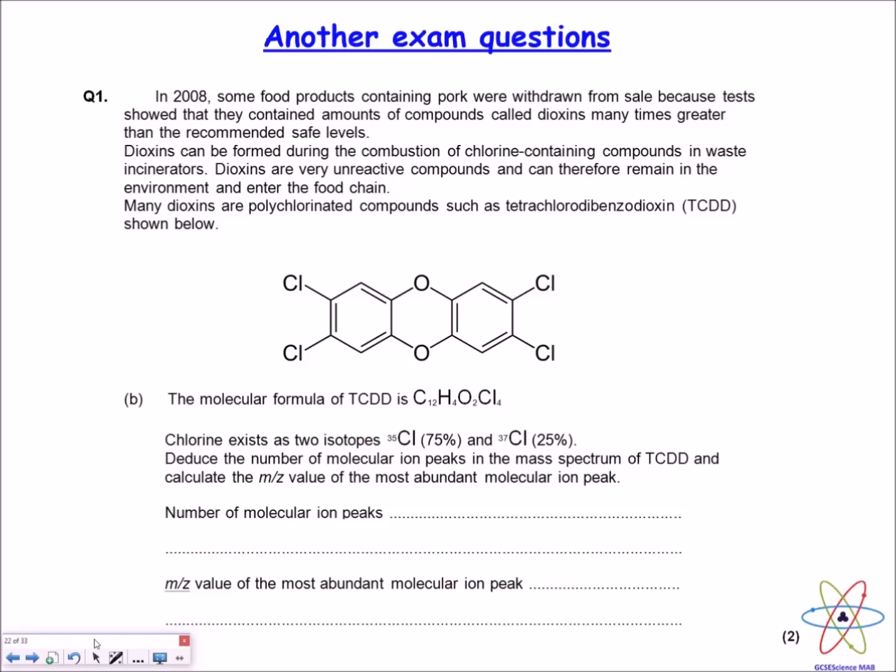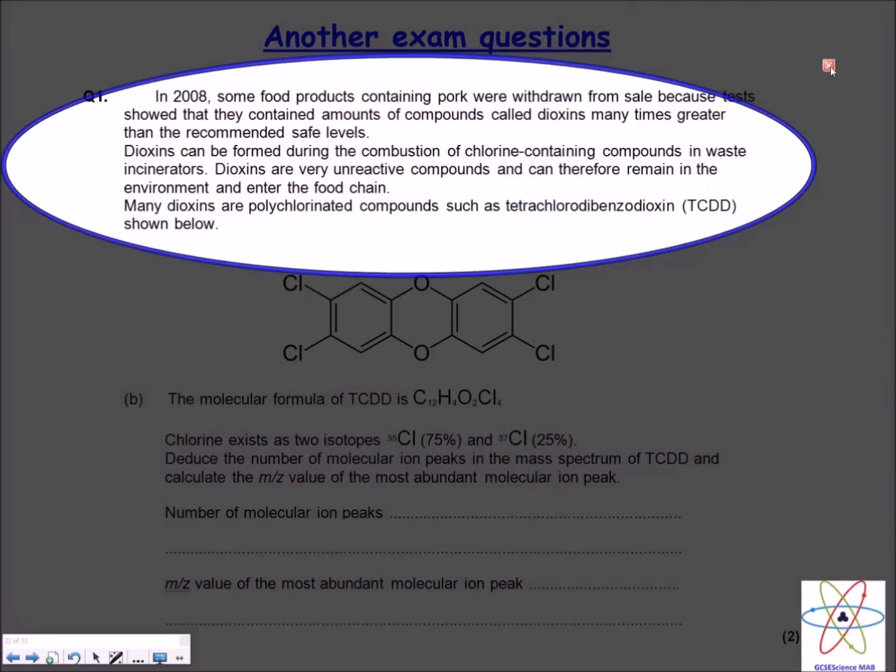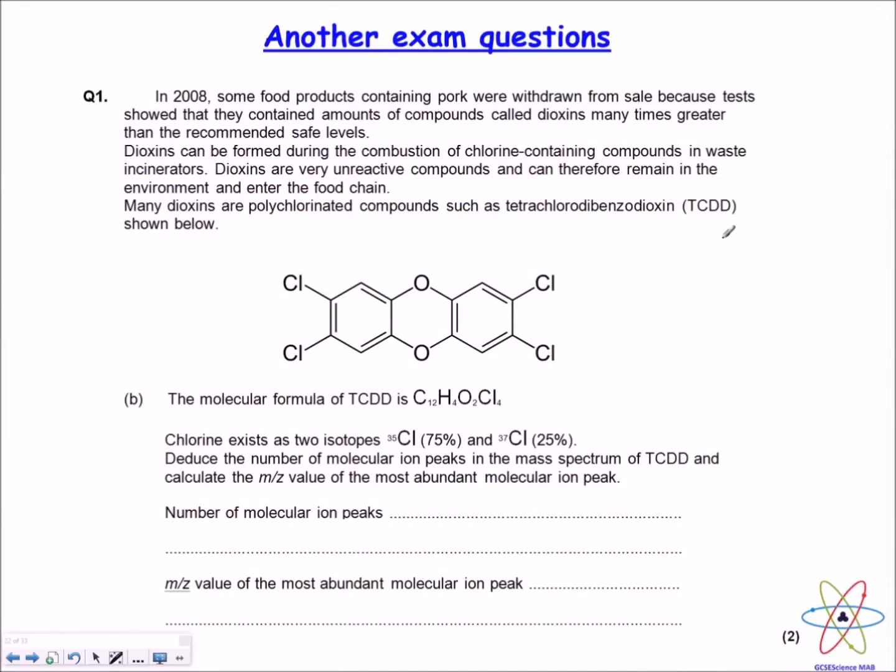The first time you see this question, you think, oh my god, this looks really complicated. Don't worry, because what you'll notice is that all this information over here is actually not required to answer the question. It's just a bit of background information on this molecule, TCDD. The bit that matters is just below this line. I was looking at the examiner's report for this question, and one of the things that the examiner said was this question was designed as a challenging question. In fact, most of the students across the UK on the AQA chemistry syllabus actually got this part of the question wrong. So if you get this right, you've done really well. I'm going to let you pause the video and have a go at this question yourself.